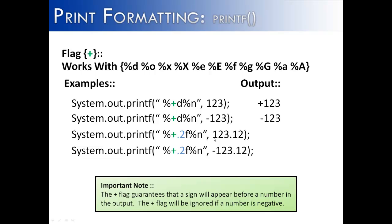Down here, I have an example with floating point, and you can see it does the exact same thing: plus to the positive number, ignores it with the negative number and places a negative sign there.